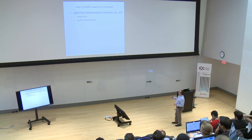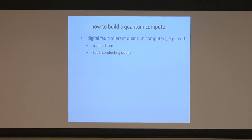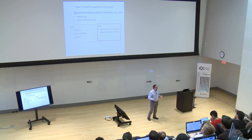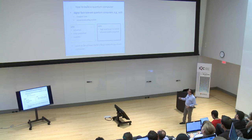Another approach is digital fault-tolerant quantum computers — fault tolerance being the key words. I think the two best candidates at this stage are trapped ions and superconducting qubits. The pros are that a digital fault-tolerant quantum computer is universal, error-protected, and thus scalable. The cons are the overhead: you need on the order of tens of millions or even hundreds of millions of physical qubits to do something useful. Nevertheless, if you want to be serious, I really think you want to spend your time building a fault-tolerant quantum computer.